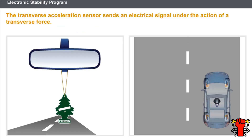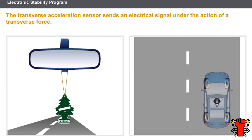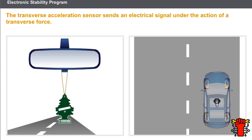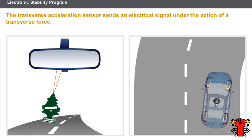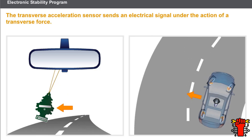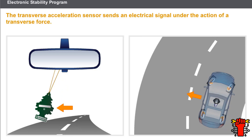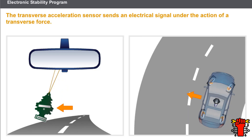The transverse acceleration sensor sends an electrical signal under the action of a transverse force. The computer determines the transverse acceleration by interpreting the change in the electrical signal from the sensor.